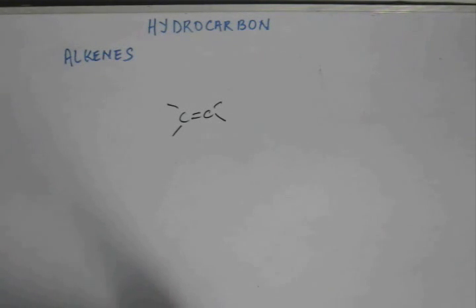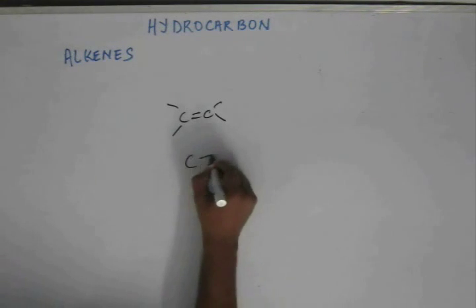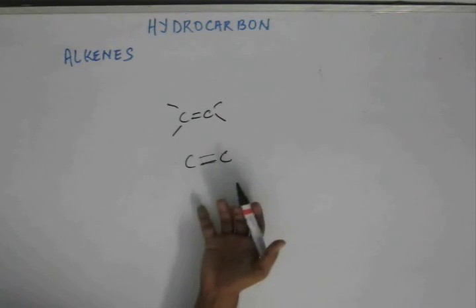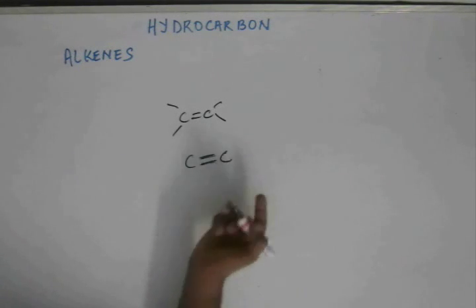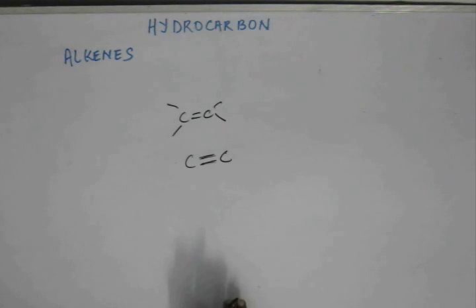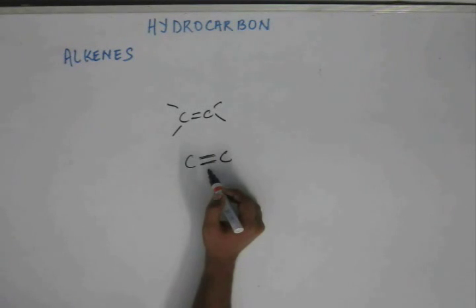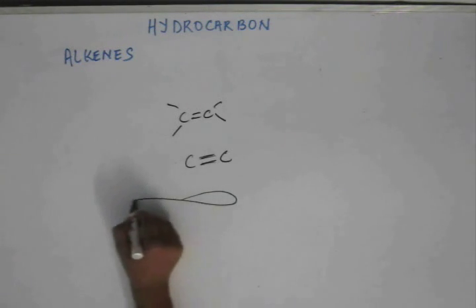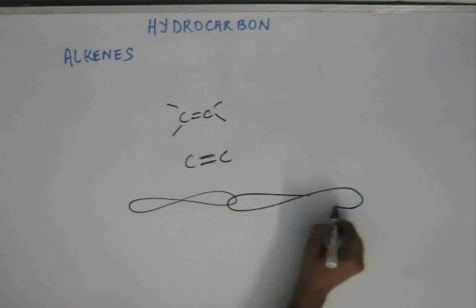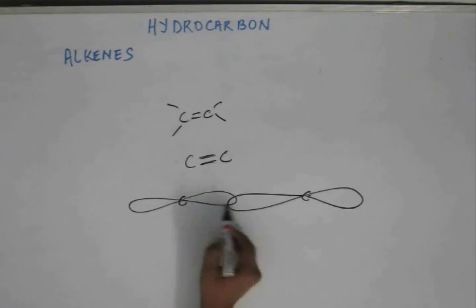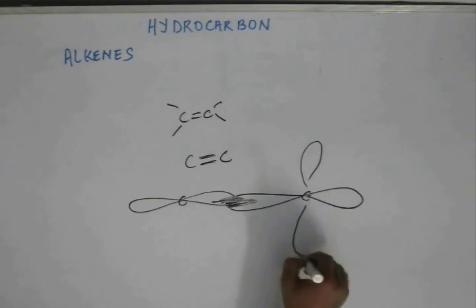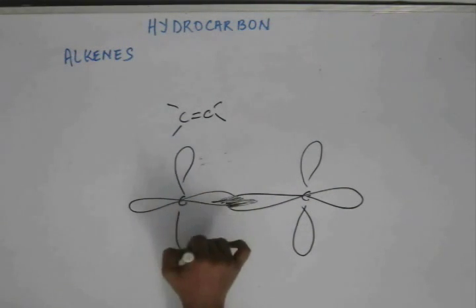The reason for the reactivity of alkene is this pi bond. There are two bonds in a carbon-carbon double bond. One of the bonds is a sigma bond — the first bond is a sigma bond — and the other bond is a pi bond. Although we draw them similarly with two dashes, one of the bonds is a strong bond which is formed by head-on overlapping. This is a carbon-carbon bond; the first bond between them is formed by head-on overlapping, so this is a strong bond.